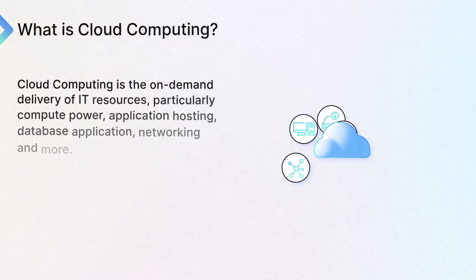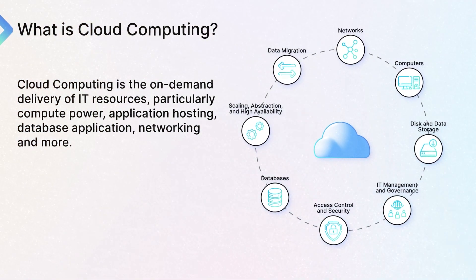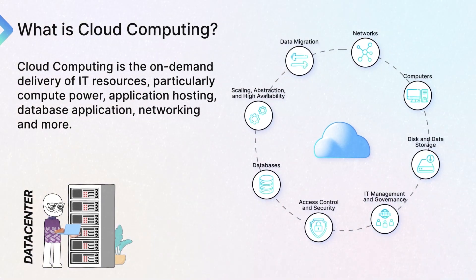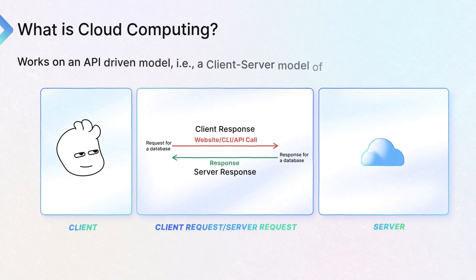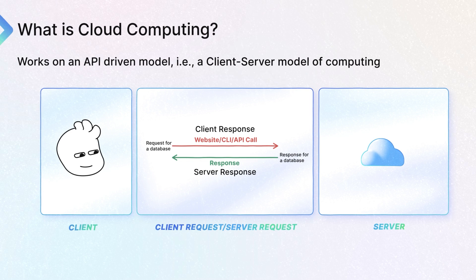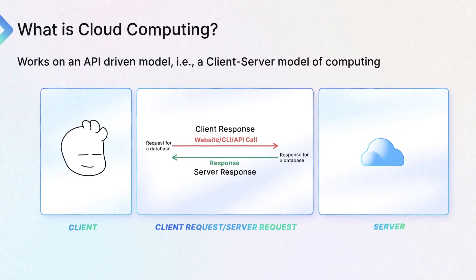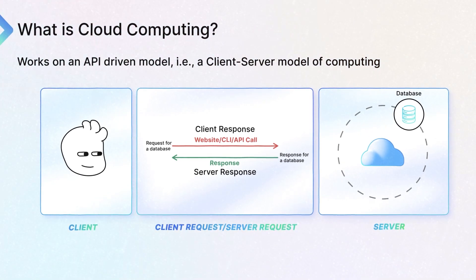Here's where it changes. The definition of cloud computing is the on-demand delivery of IT resources, particularly things like compute power, application hosting, database applications, networking, and more. There are so many services that have to be run inside of a data center, and what if some of those could be offloaded to a cloud computing platform? Cloud computing works off of an API-driven model. Much like you going to a coffee shop and making a request for coffee, a client comes in and makes a request — either from a website, a CLI, or an API call — and it's actually requesting a database. The cloud responds by saying it's going to stand up a database based on whatever specifications the client requested. And it really is actually that simple once you have your account set up.